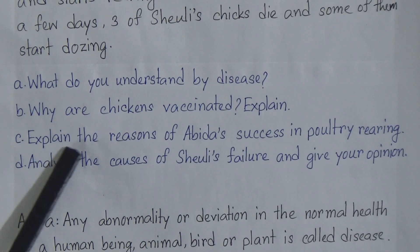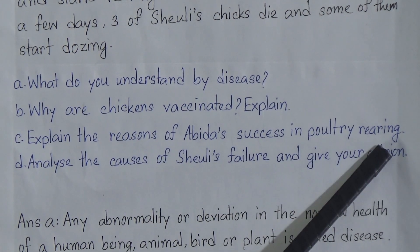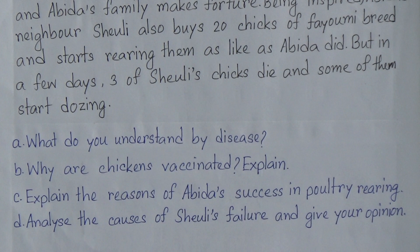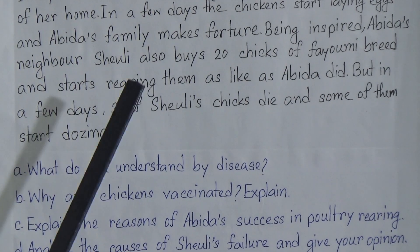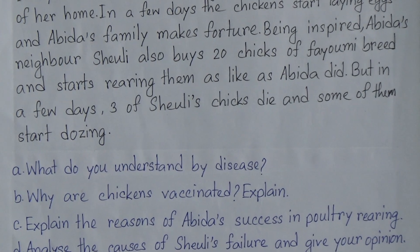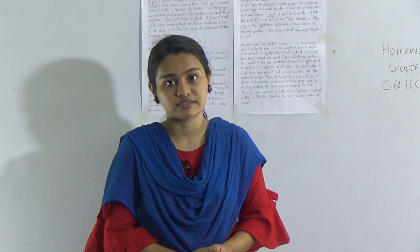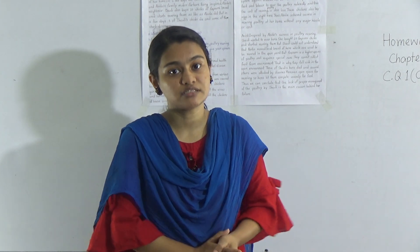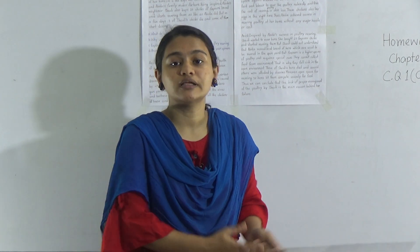Question number C: explain the reasons for Abhida's success in poultry rearing. For this answer, you need to use the stem. Abhida reared 10 local layer chickens, and that is why she chose to rear them in an open or free space. In open or free space, we do not need to give any extra labor. In this process, the poultry can feed themselves from the surrounding environment, so they can be reared at less cost, and they also lay eggs on time.